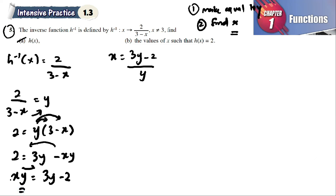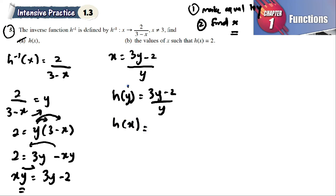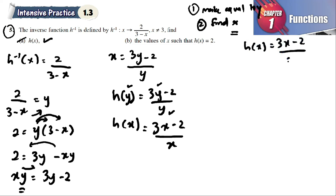Since we have y multiplied with x, we divide to isolate x. This result is h(x) expressed in terms of y. Since h inverse of x gave us this, the original h is obtained by swapping y to x. So h(x) equals (3x minus 2) divided by x.